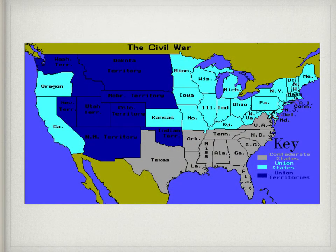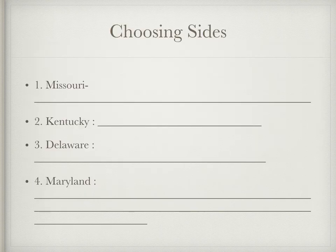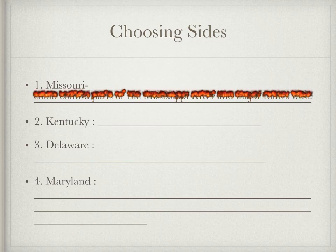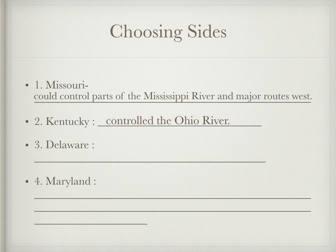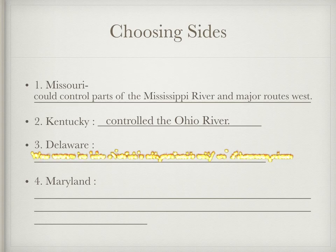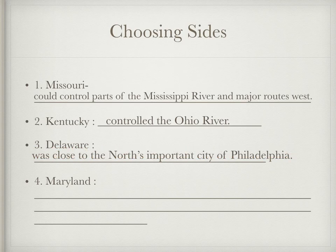Take a look at this map. The gray areas are Confederate states, the light blue are Union states, and the dark blue are Union territories — they weren't actually states, just territories. Missouri controlled parts of the Mississippi River and major routes west. Kentucky controlled the Ohio River, which is its northern border. Delaware was close to Philadelphia, a very important manufacturing city for the Union.